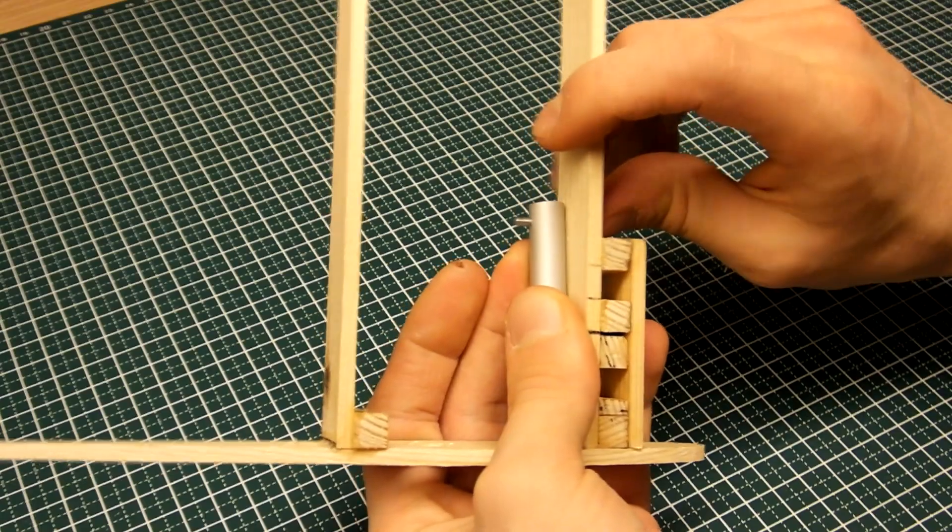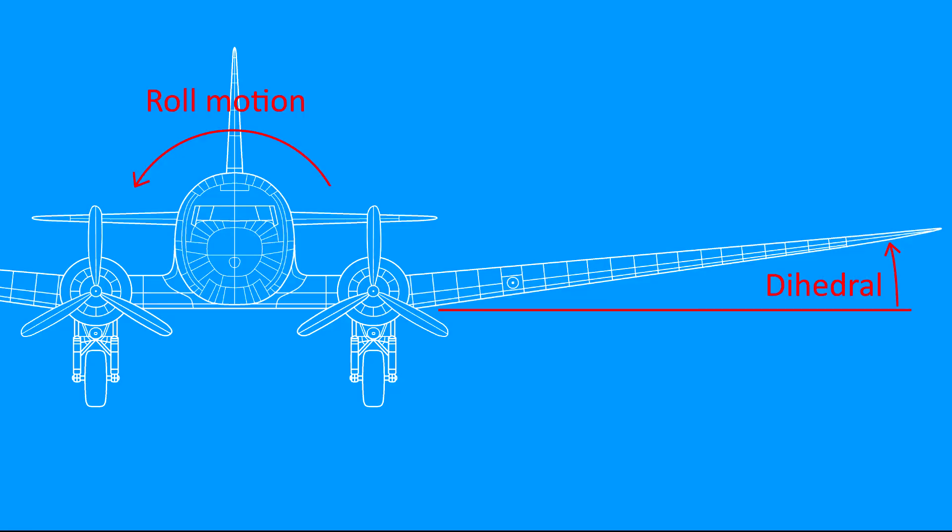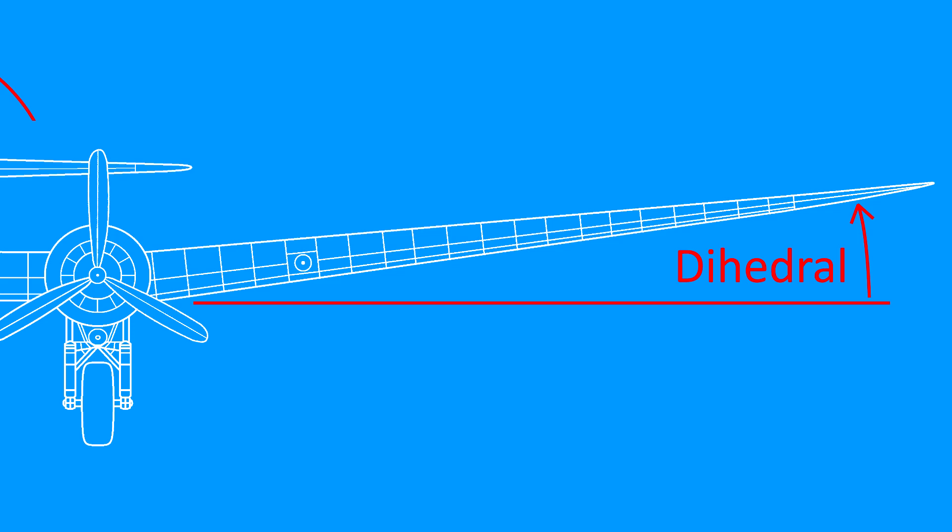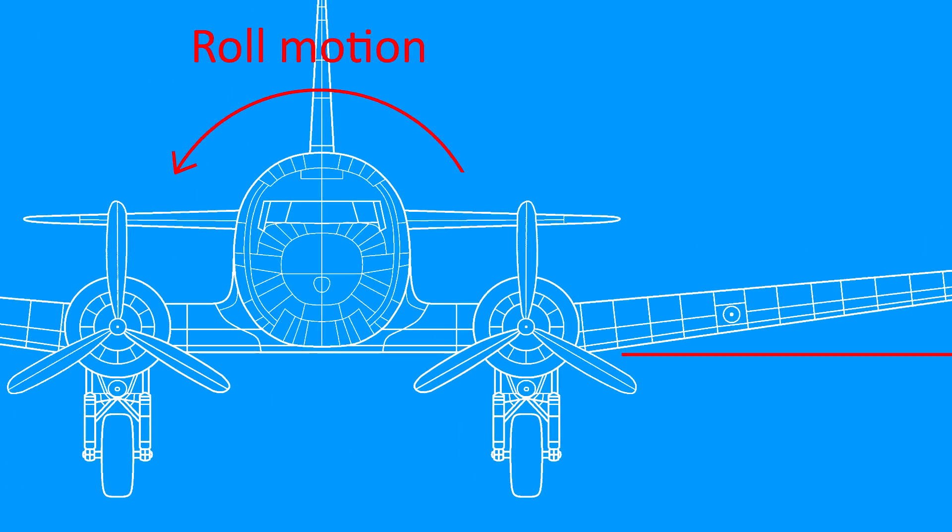The angle of the pipe was carefully measured, as it will determine the dihedral of the wing. That is the slight up-tilt of a wing that keeps the aircraft stable along its roll axis.